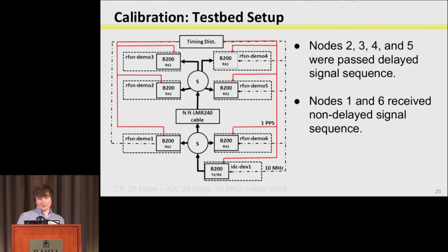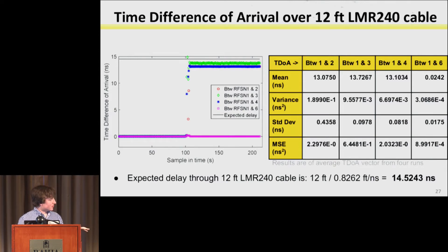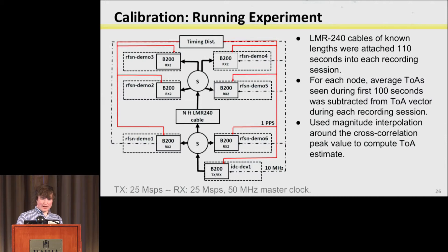Here's how we calibrated: we've got four nodes on a set-length cable, two receivers before the delay cable, and one transmitter. The result is you should have two with zero delay and four with some expected delay. We would first start recording without the delay cable so all were non-delayed for the first 110 seconds, then hook up the delay cable so you can see a clear bump in the data from where it should be zero to where it should have the delay. We subtracted out the inherent delay by averaging that first 100 seconds and subtracting it from the rest of the TOA vector.